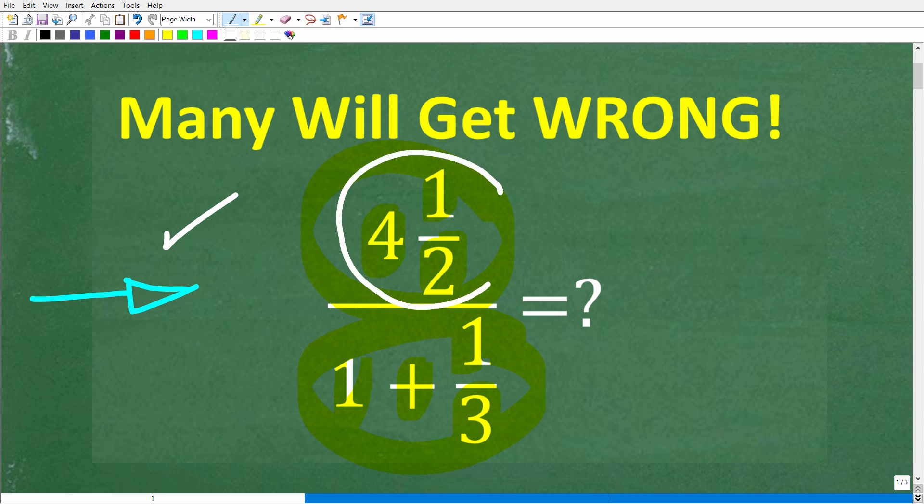Alright, so one more time. Our numerator is this mixed number fraction, 4 and 1 half. And our denominator is all of this, 1 plus 1 third. So let's go ahead and take a look at the solution.